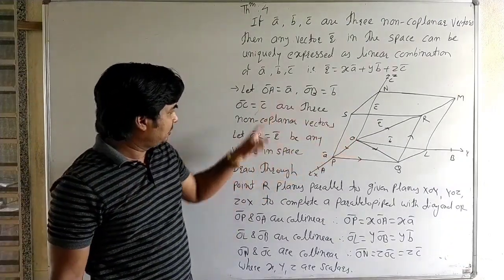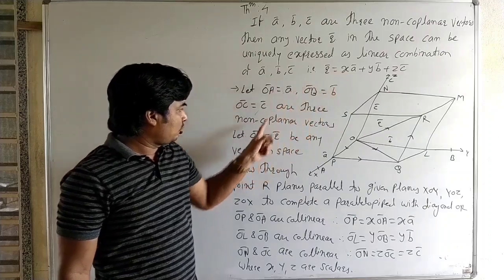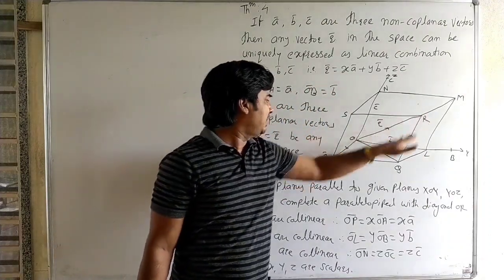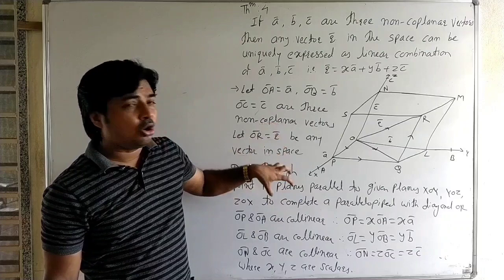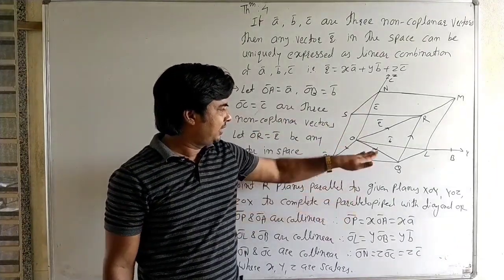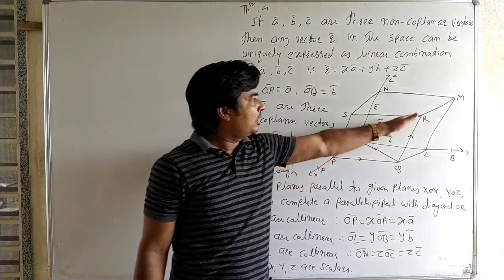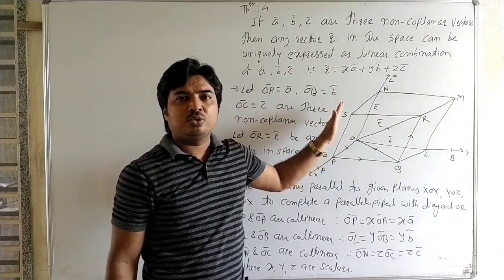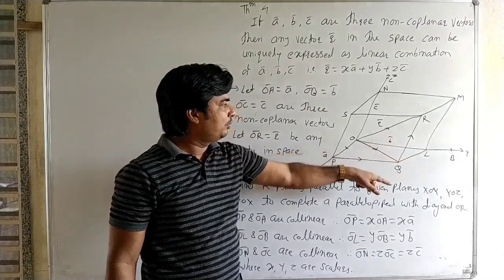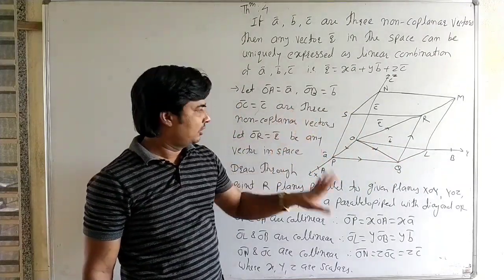Now here we can write: a-bar, b-bar, c-bar are non-coplanar vectors, and OR is any vector in the space. Draw through point R parallel planes to the planes XOY, YOZ, and ZOX. The planes are now AOB, BOC, and COA.